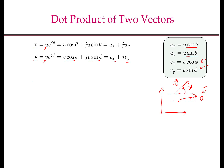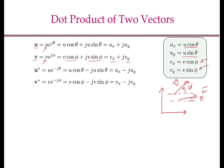Since u and v are complex numbers, they have a complex conjugate, written as u* and v*, which are u·e^(-jθ) and v·e^(-jφ) respectively. Using Euler's expansion, u* equals u·cos(θ) - j·u·sin(θ), using cos(-θ) = cos(θ) and sin(-θ) = -sin(θ), which becomes ux - j·uy. Similarly, v* = v·e^(-jφ) = v·cos(φ) - j·v·sin(φ) = vx - j·vy.